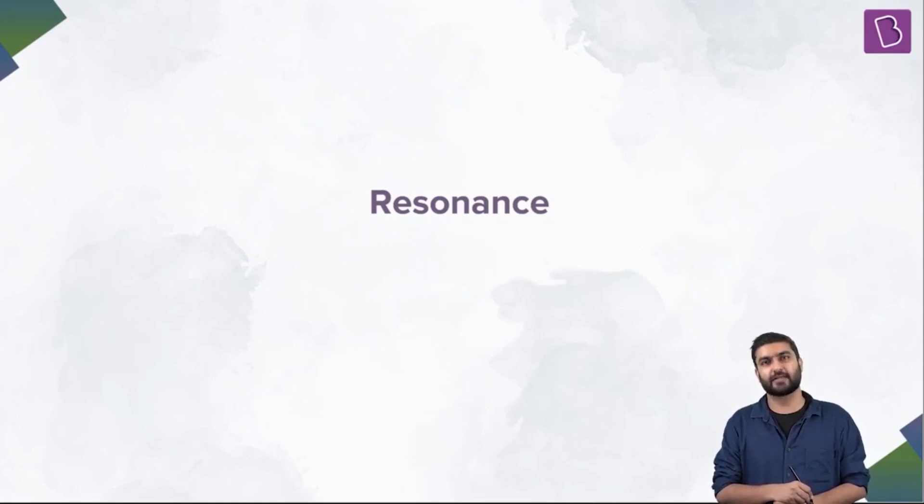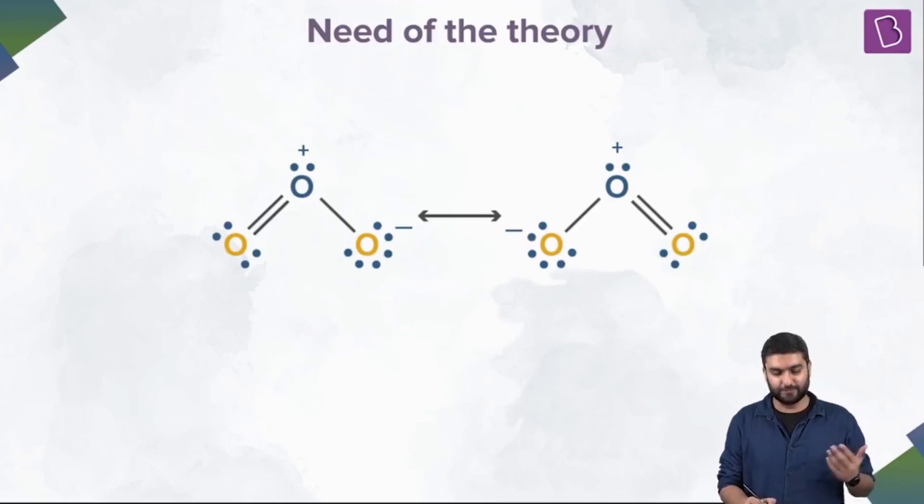We are going to study just to give you an intuition of what this concept is. So let's start. The first question is why did we need the theory of resonance? And so it goes that, for example, there were some structures which could not be entirely explained based on a single Lewis structure. Now let me elaborate on what I mean.